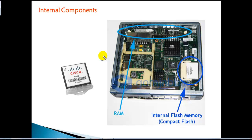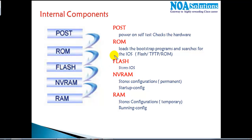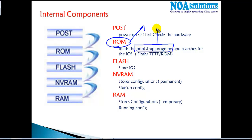Inside the router you'll find different kinds of components. The first component is ROM — Read-Only Memory. It is similar to the BIOS chip on our computers, and it stores a program called the bootstrap program, similar to your BIOS program, which tells how the operating system has to be loaded, or how the IOS has to be loaded.